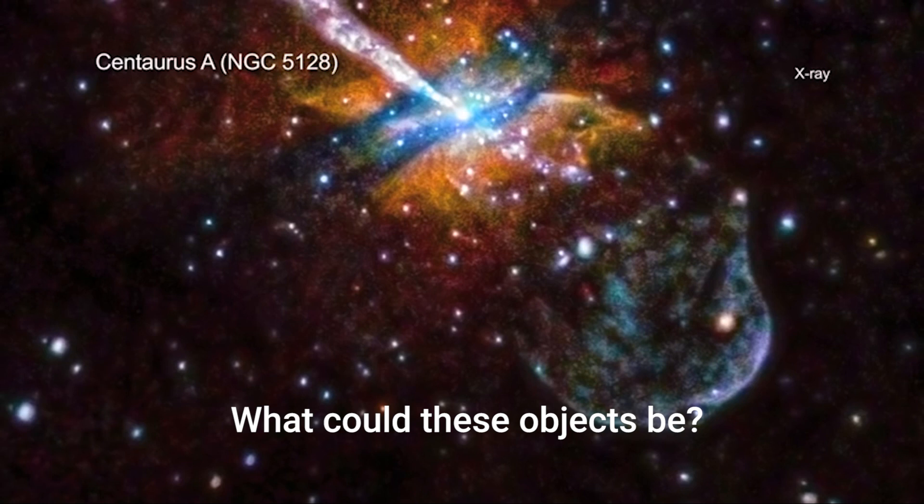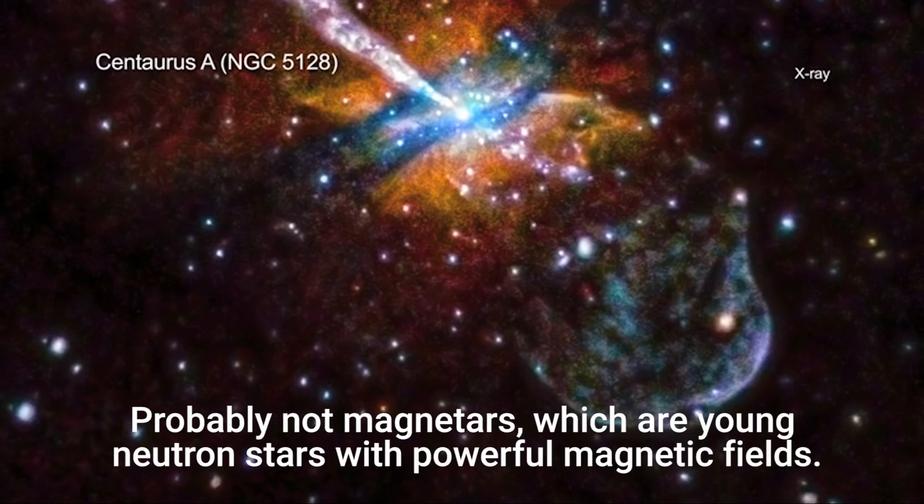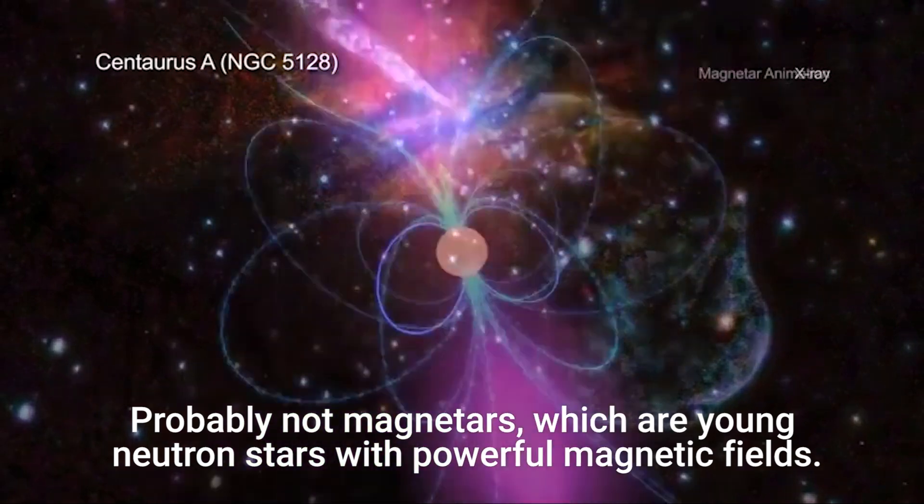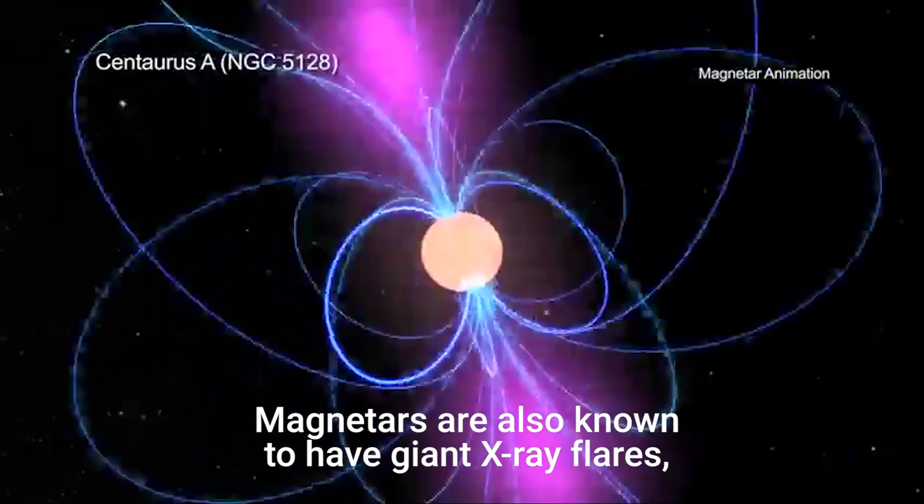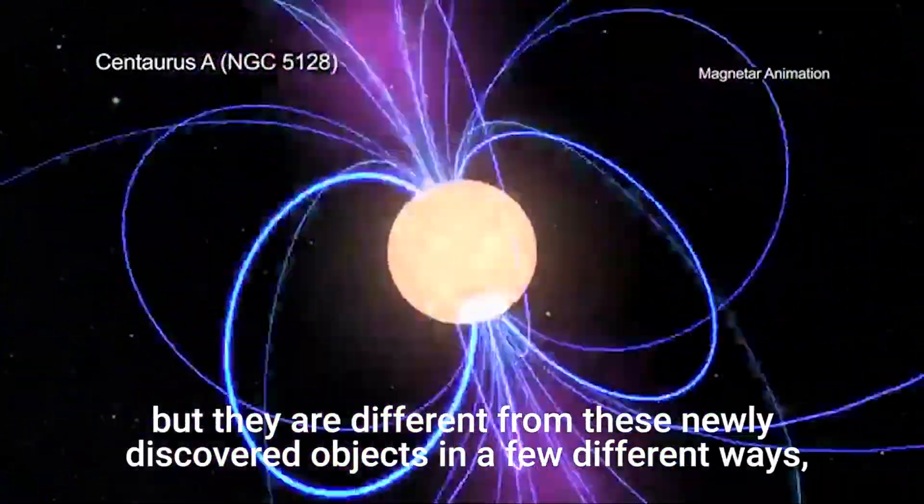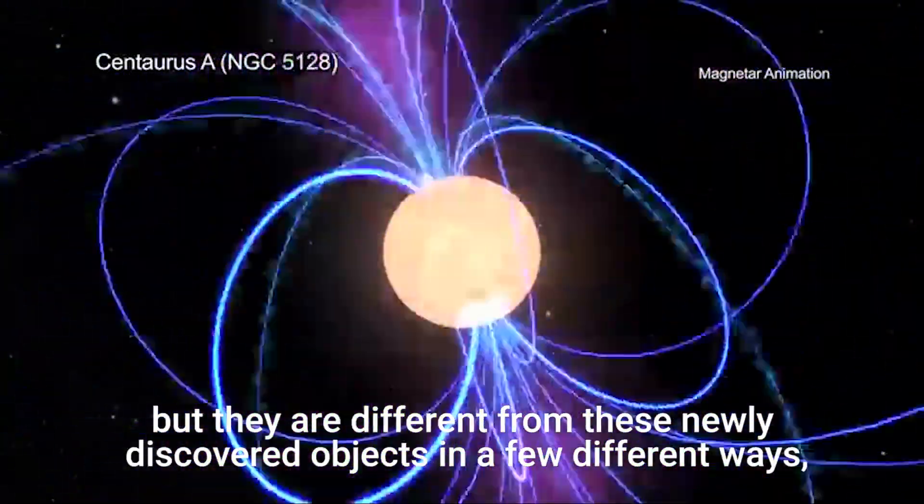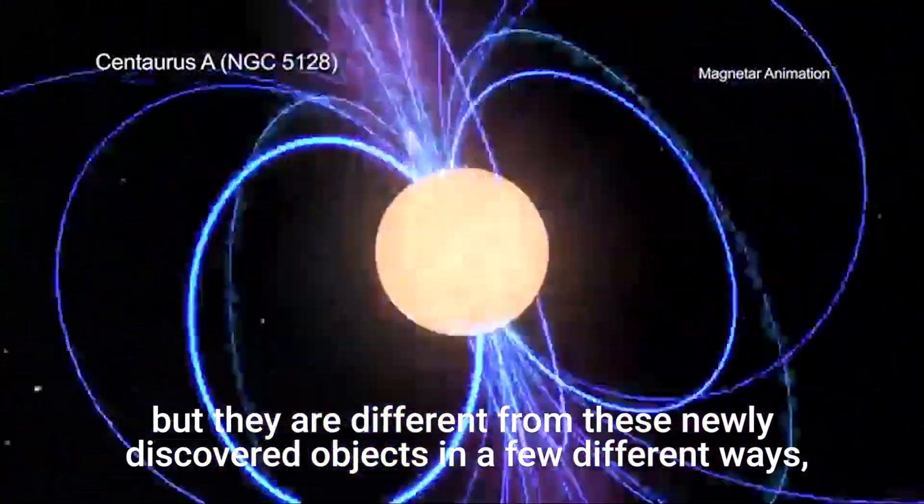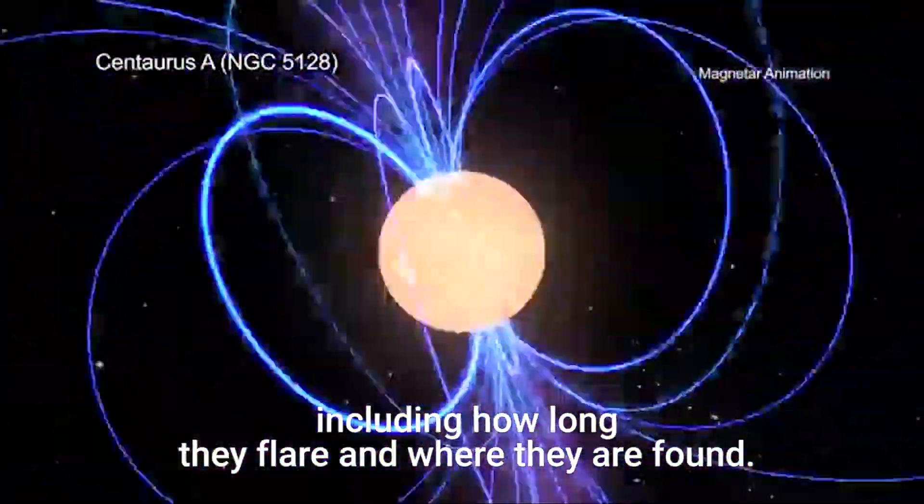What could these objects be? Probably not magnetars, which are young neutron stars with powerful magnetic fields. Magnetars are also known to have giant X-ray flares, but they are different from these newly discovered objects in a few different ways, including how long they flare and where they are found.